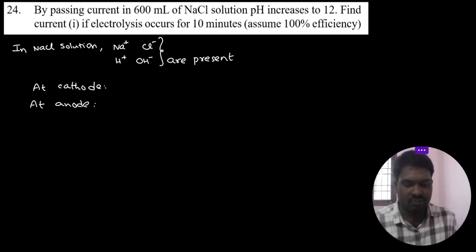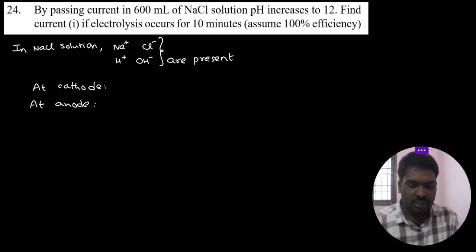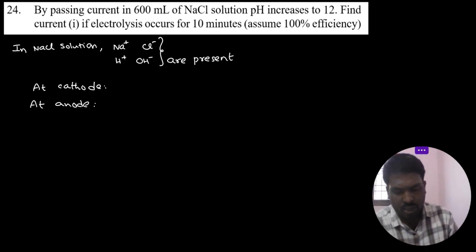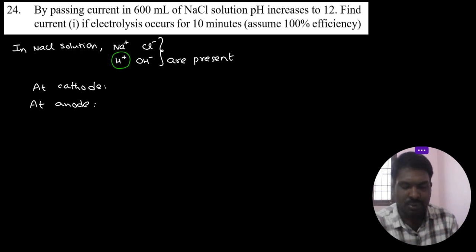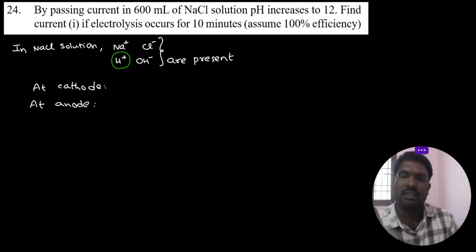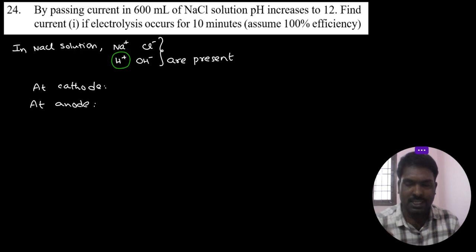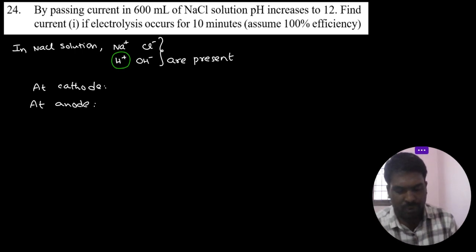Assume 100% efficiency. NaCl aqueous solution — that is a brine solution — contains Na⁺, Cl⁻, H⁺, and OH⁻ ions, since it is an aqueous solution. Among the cations Na⁺ and H⁺, H⁺ has the lesser discharge potential, so H⁺ is preferably involved in the reaction first.